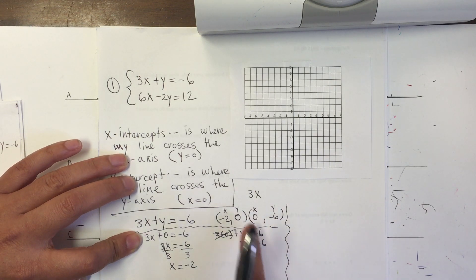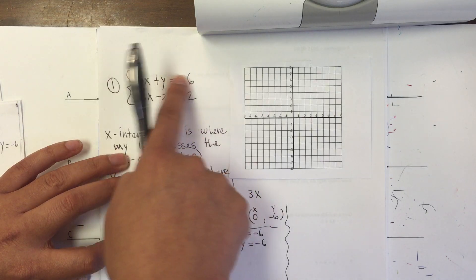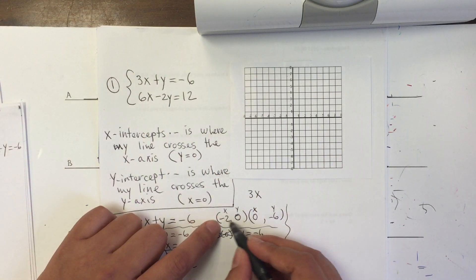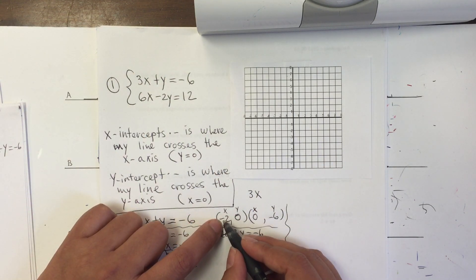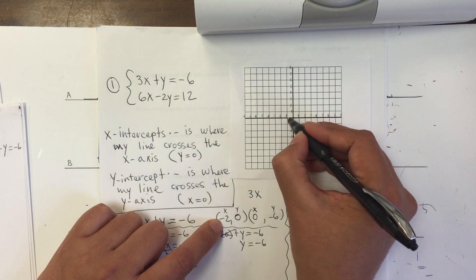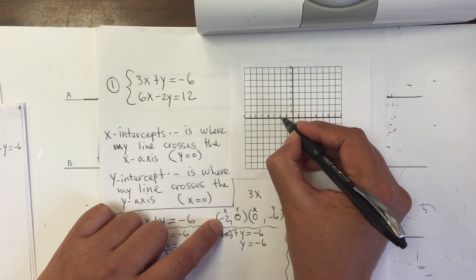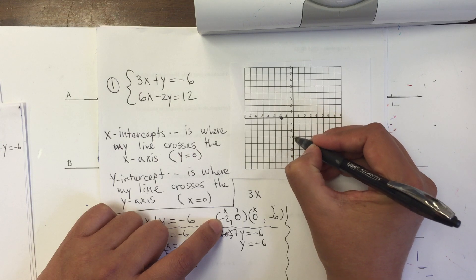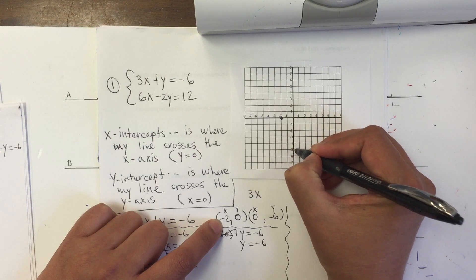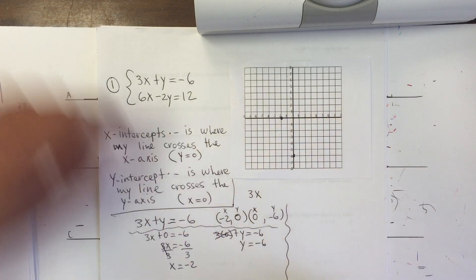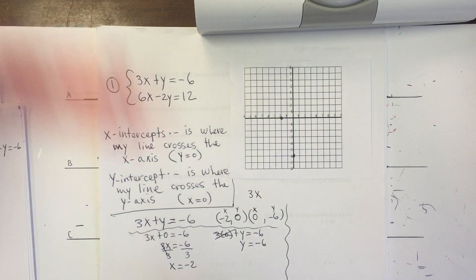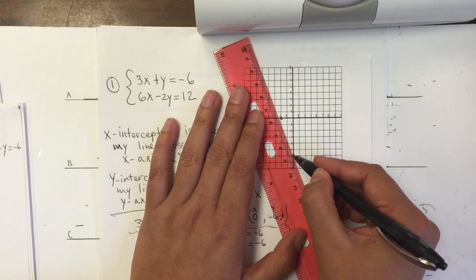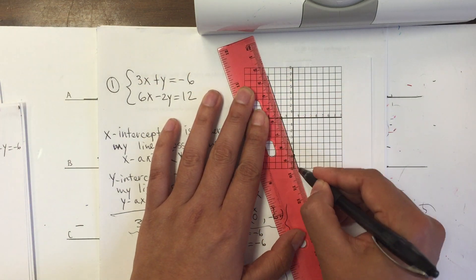That's for the first equation. We found the two intercepts: the x-intercept is negative 2, 0, and the y-intercept is 0, negative 6. And I have my first line.